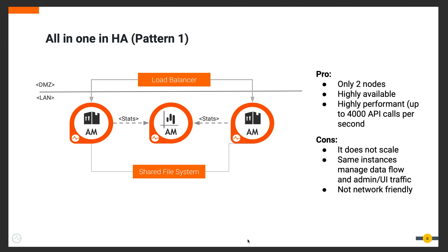However, there are some downsides to this pattern. It does not scale horizontally — you can't simply add a node if it needs to scale — because some API Manager components such as the traffic manager are inherently non-scalable. Also, you cannot achieve basic separation of concerns: data flows, runtime, web portal, management plane, security, and traffic management all run together. This means the pattern is also not network-friendly, as you can't segregate different components into different network segments, which may be required per security assessments.